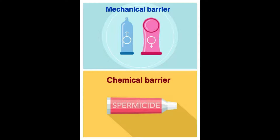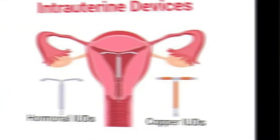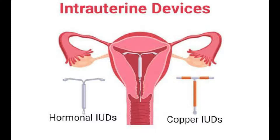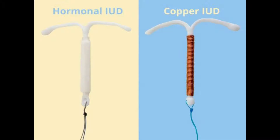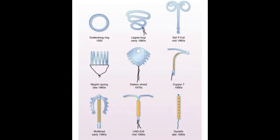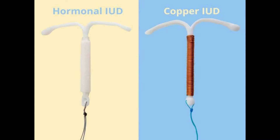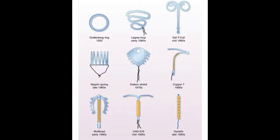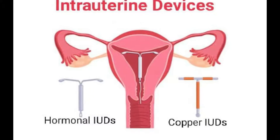Moving to the third method: intrauterine devices or IUDs. These devices are placed in the uterus through the vagina by doctors. Types include: copper-releasing IUDs such as CuT, Cu7, and Multiload 375; hormone-releasing IUDs such as LNG20; and non-medicated IUDs such as Lippes loop. You can see in the image how intrauterine devices are placed.